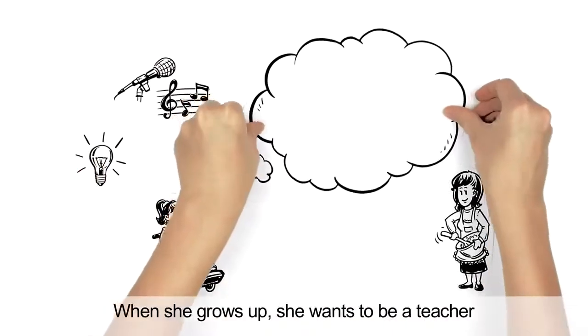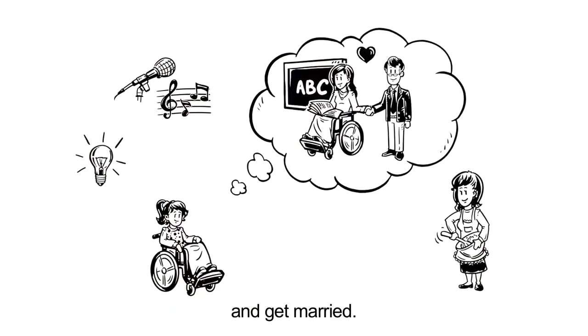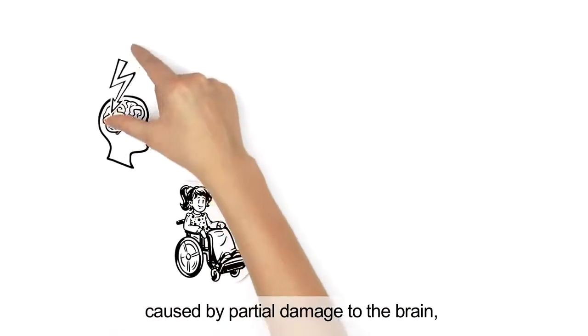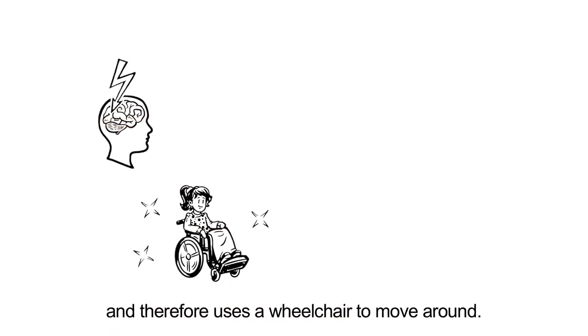When she grows up, she wants to be a teacher and get married. Sara has cerebral palsy caused by partial damage to the brain and therefore uses a wheelchair to move around.